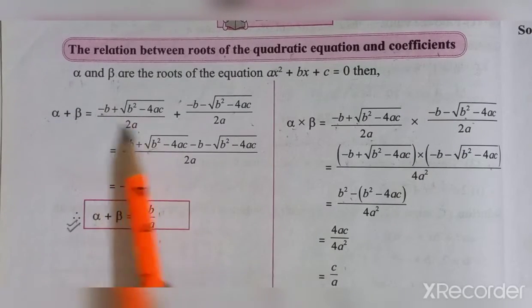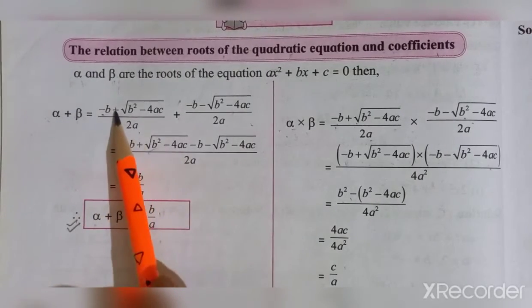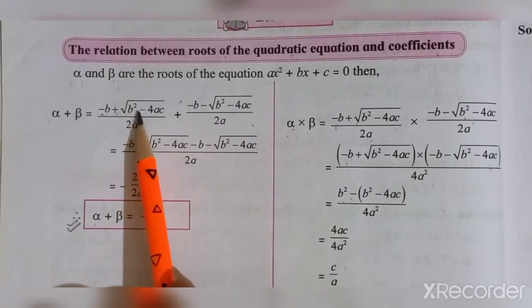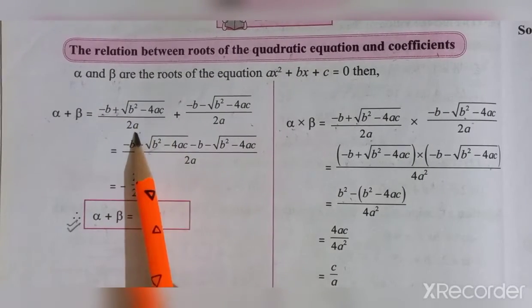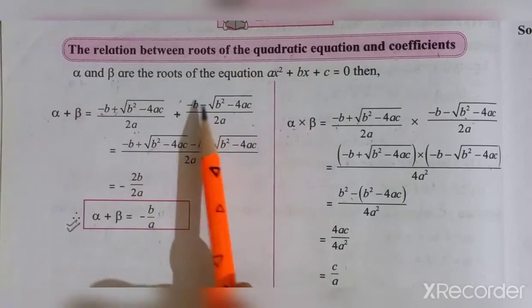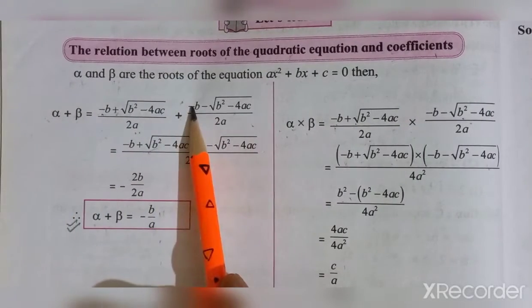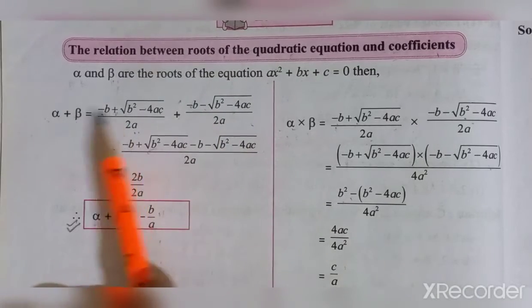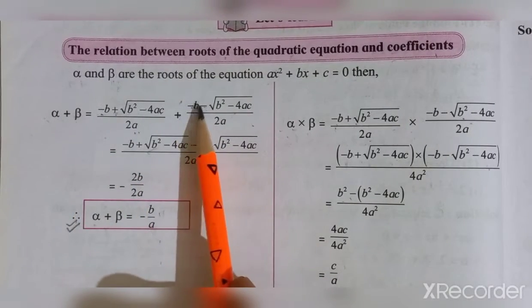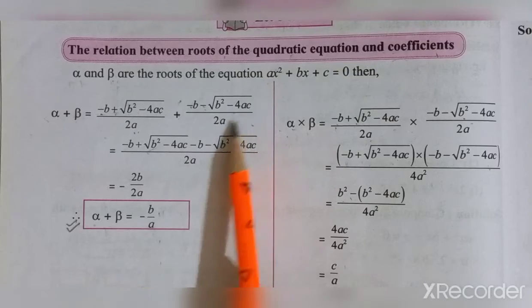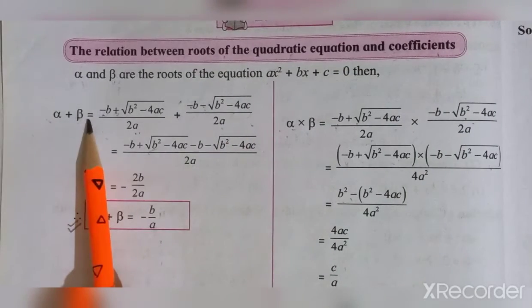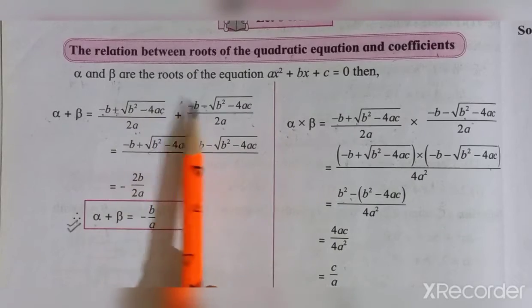The formula for alpha is: minus b plus root of (b² minus 4ac) upon 2a. And the value of beta is: minus b minus root of (b² minus 4ac) upon 2a. Now we are adding alpha plus beta, meaning these two roots of the quadratic equation.